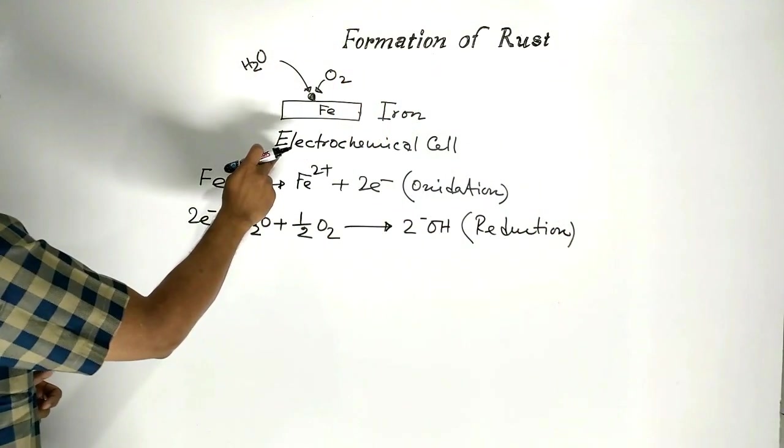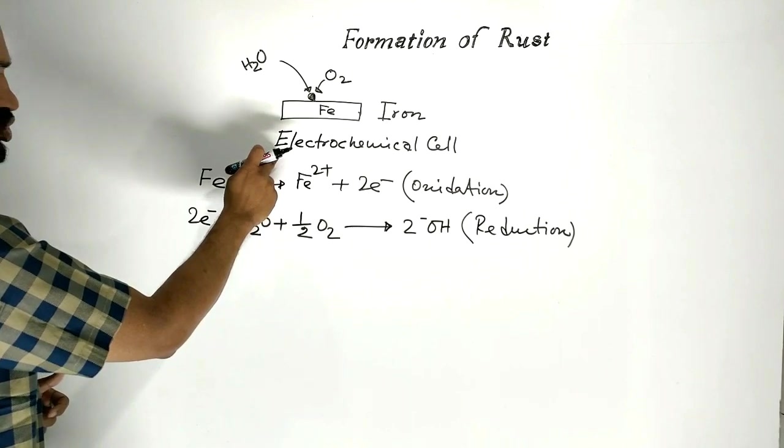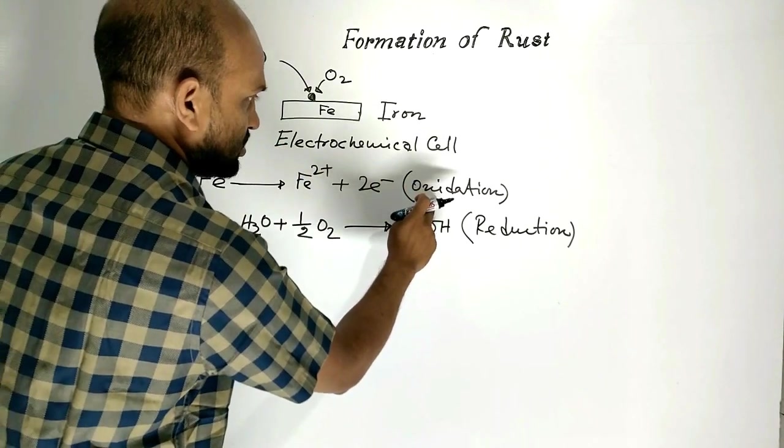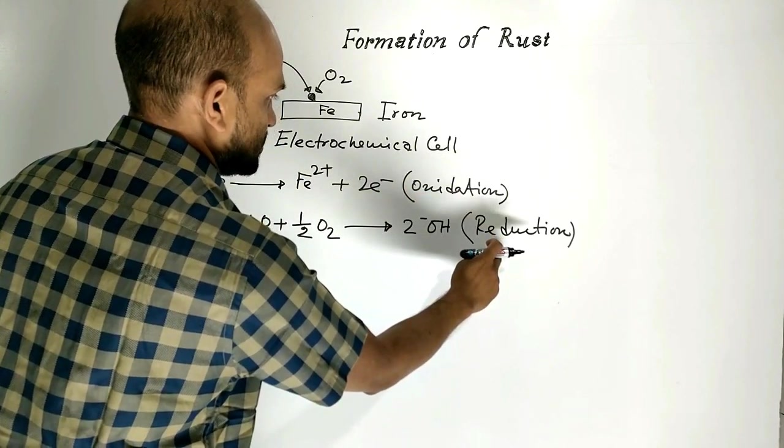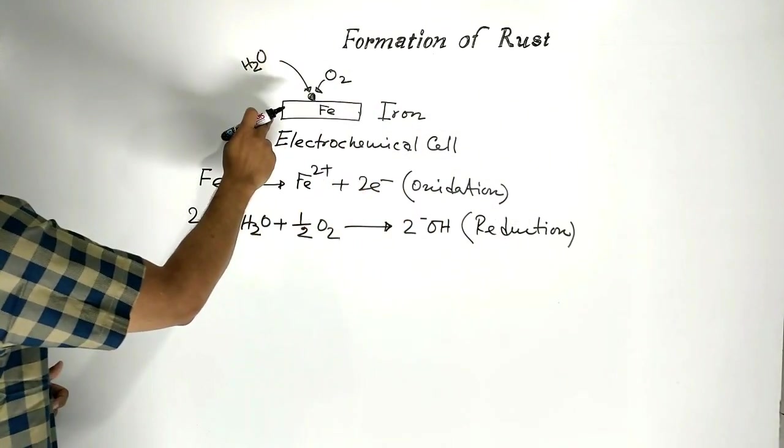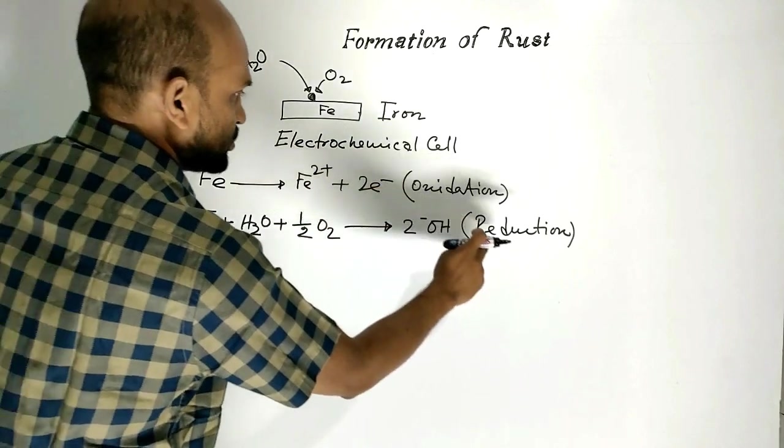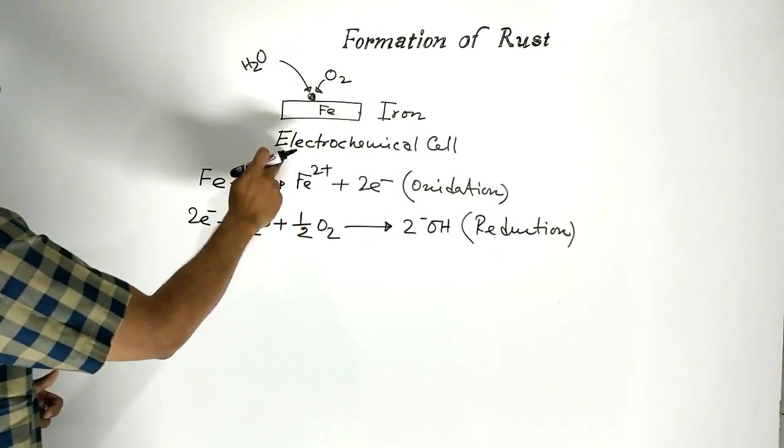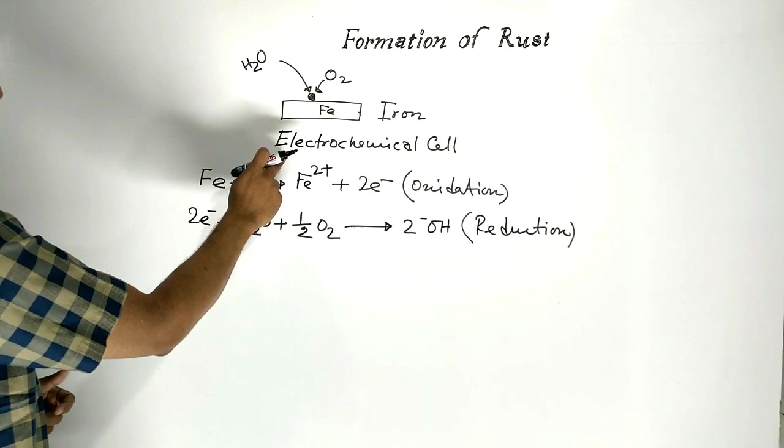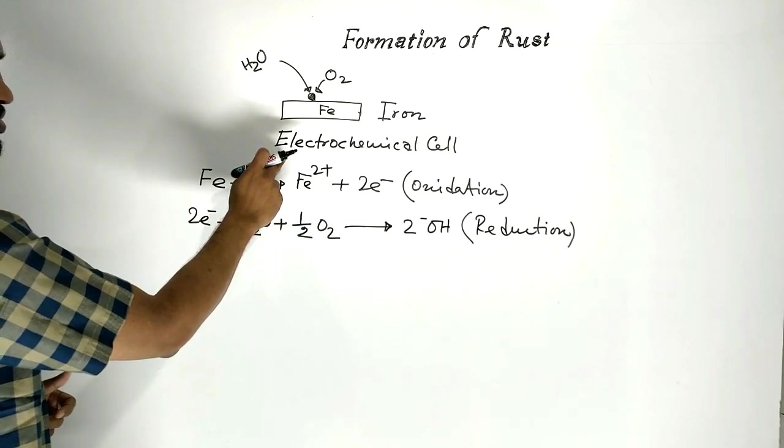So, electrochemical cell in which oxidation and reduction occur. At the time of rust formation, oxidation and reduction occur like electrochemical cell or galvanic cell.